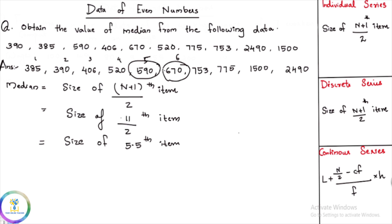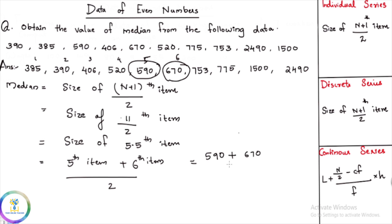The 5.5th item means we take the 5th item and the 6th item — the average of the 5th item and the 6th item. The 5th item is 590 and the 6th item is 670. The average of 590 and 670 is 630. So the median is 630.